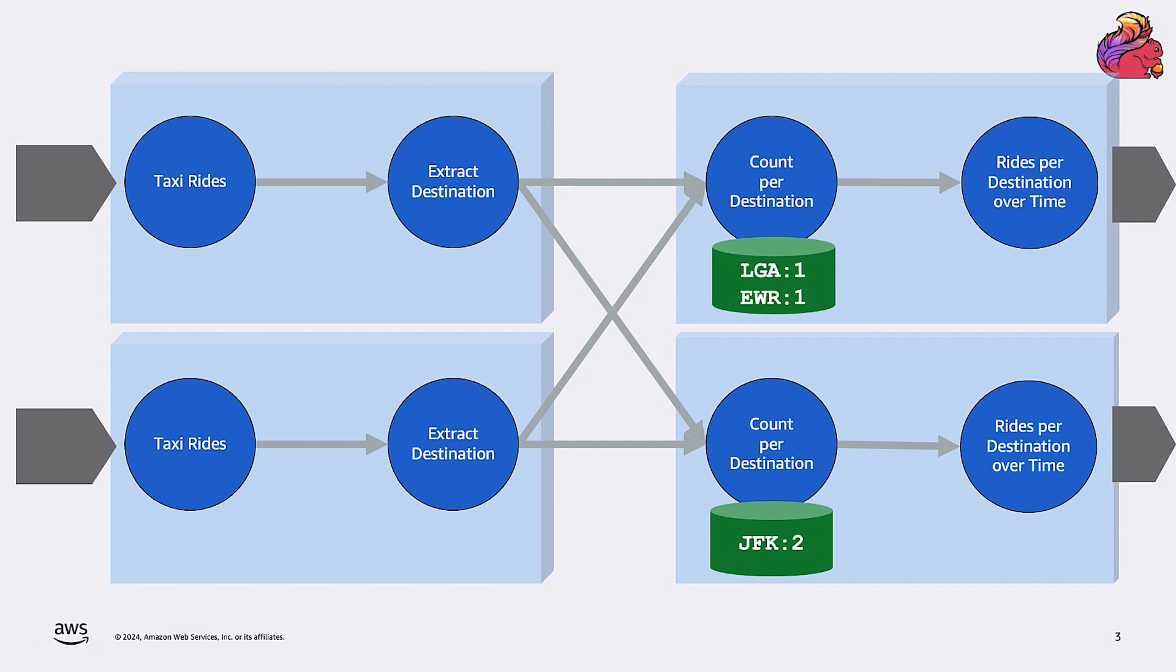We also know that Flink distributes the application across multiple machines, and this is the way Flink can scale horizontally, adding more smaller machines. Let's pretend our application is running on a cluster of four machines. The state is stored in the memory or on the disk of the nodes that are actually calculating the trip count.